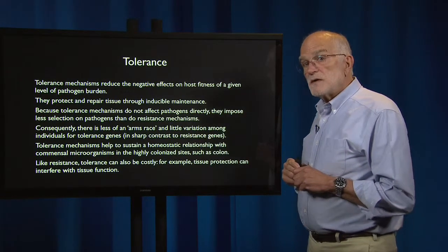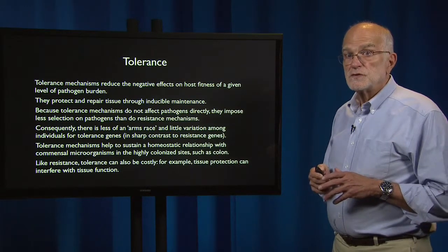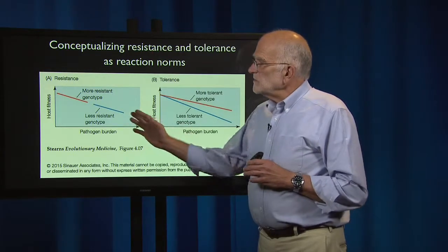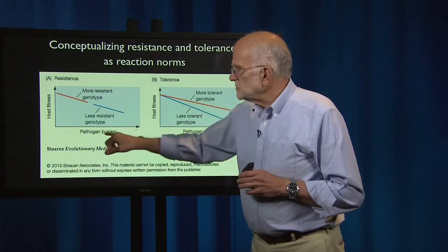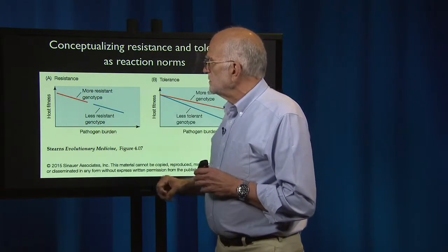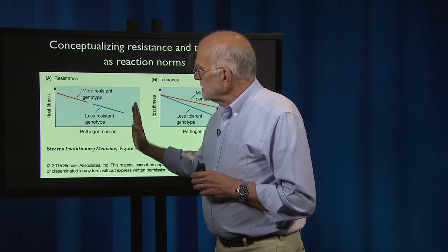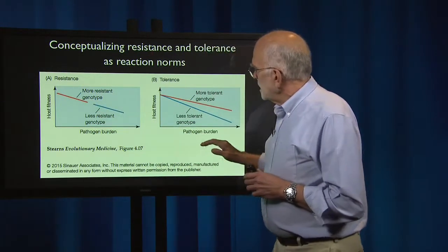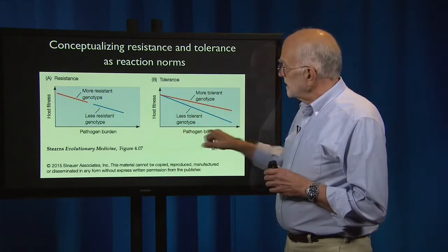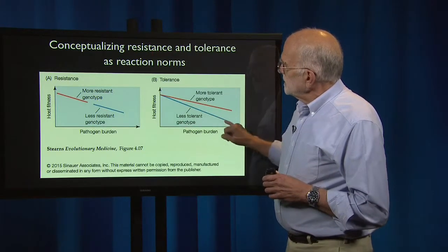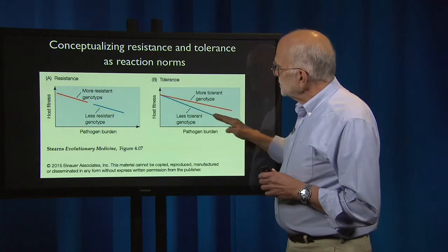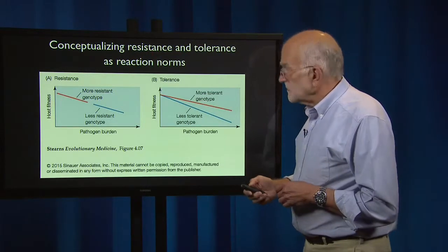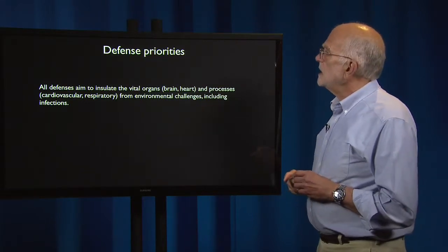Like resistance, tolerance can also be costly — for example, tissue protection can interfere with tissue function. One way to conceptualize resistance and tolerance is to think of reaction norms. In the left-hand panel, the x-axis shows pathogen burden increasing to the right and the y-axis shows host fitness. The more resistant genotype has lower pathogen burden and is more fit; the less resistant genotype has higher pathogen burden and is less fit. For tolerance, the blue line is the less tolerant genotype — as pathogen burden increases, it loses fitness fairly rapidly — while the more tolerant genotype maintains fitness better as pathogen burden increases.